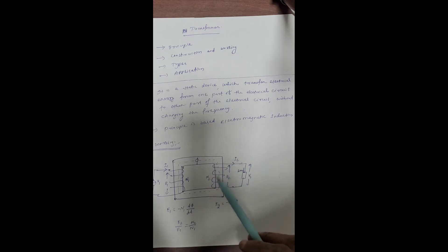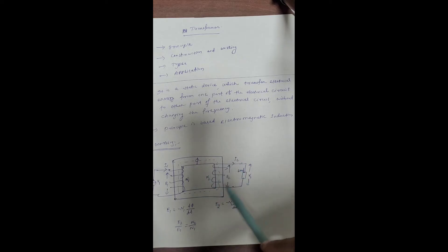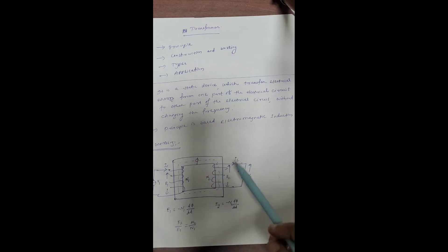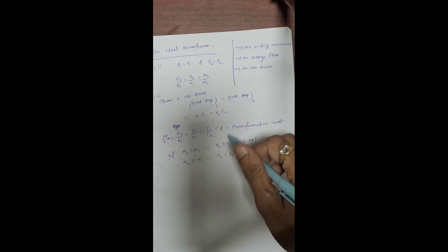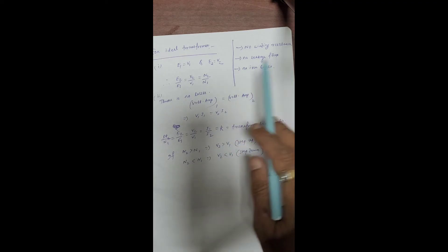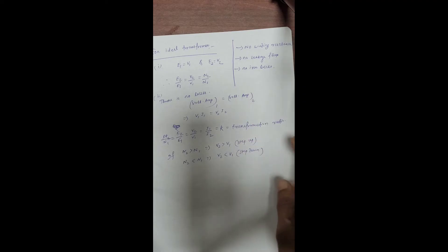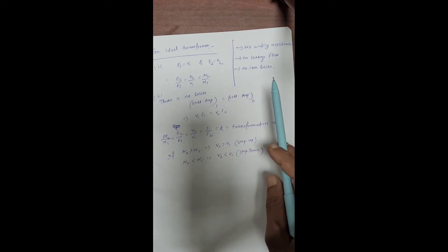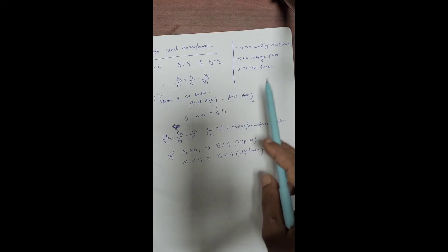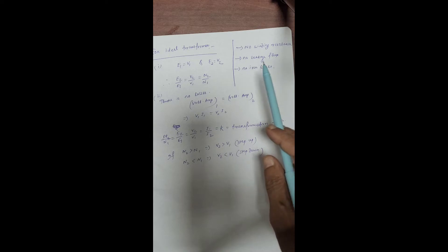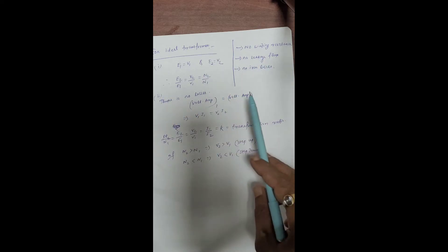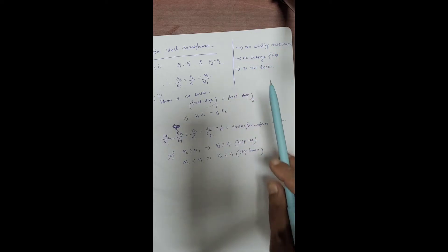Fourth, the losses in a transformer are of two types: core losses and copper loss. Core loss consists of eddy current loss and hysteresis loss. Copper loss is due to the resistance of the primary and secondary windings. Regarding the ideal transformer — there are three conditions: first, there should be no winding resistance in primary and secondary; second, there should be no leakage flux; and third, there should be no iron loss. All practical transformers have these losses, but since our syllabus covers the ideal transformer, we should know these conditions.